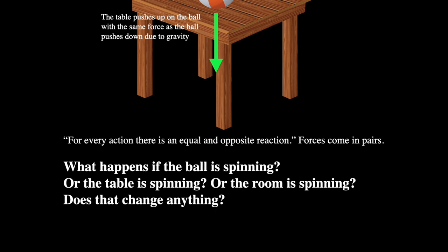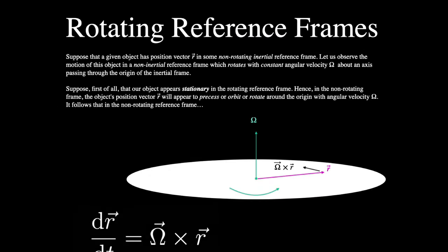What happens if we take that example and the ball is spinning, or the table is spinning, or the room containing the ball and the table is spinning? Does that actually change anything? The answer is yes. That is called a rotating reference frame. A rotating reference frame is really important to understand a huge number of things in astrophysics and celestial mechanics — and relativity relies on this as well. Rotating reference frames don't change Newton's laws, but they do change how we interpret them.